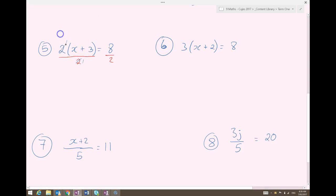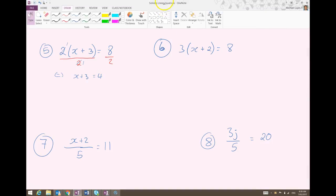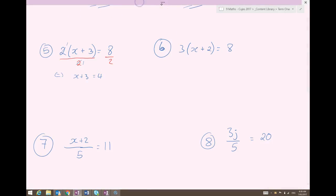2 divided by 2, cancel the common factors. So I am left with x plus 3 equals 4. I now subtract 3 from each side. Oh, got the wrong colour pen there. Subtract 3 from each side, maintaining equality. And I am left with x equals 1. Not so bad, that one.